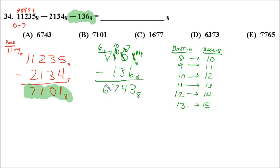And then the 6 just kind of drops down into place. Total difference is 6743, and base 8. And that's the answer to an A.